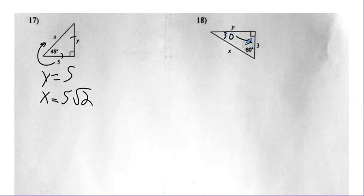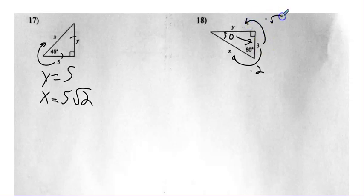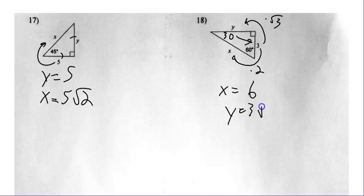Number eighteen — I have the short leg. So I can go from here to the hypotenuse and double it. And I can go from the short leg to the long leg and just tack on a radical three. So X is three times two, and Y is three radical three.